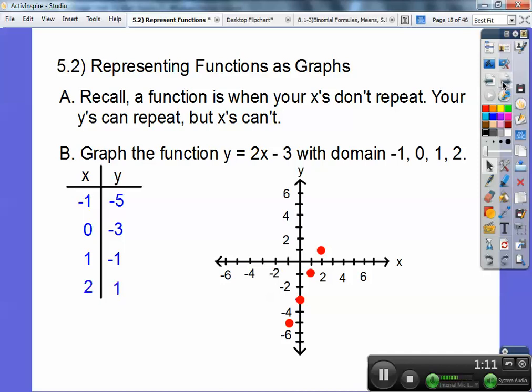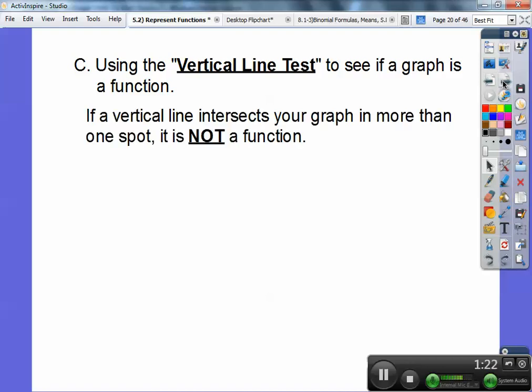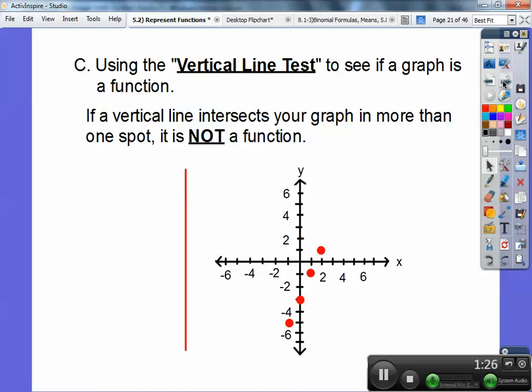All right. So we're going to go now to what's called the vertical line test. The vertical line test tells you if it's a function or not, if they give you the graph. So if the vertical line intersects your graph in more than one spot, then it is not a function.